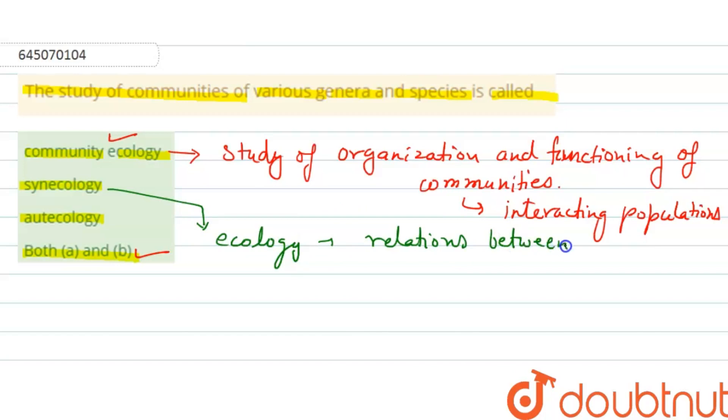Group of organisms or coexisting biological communities, right. So this is also correct for the question. And the third option, that is autecology.